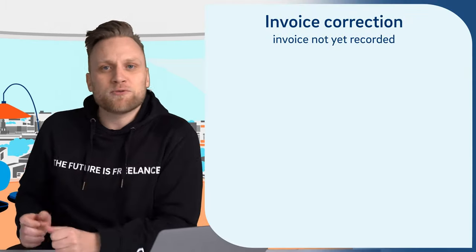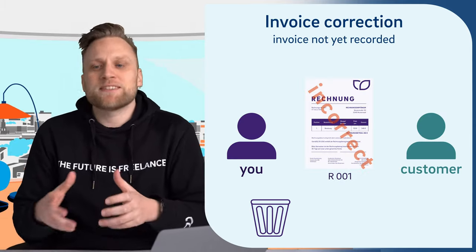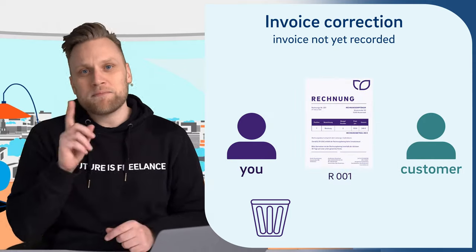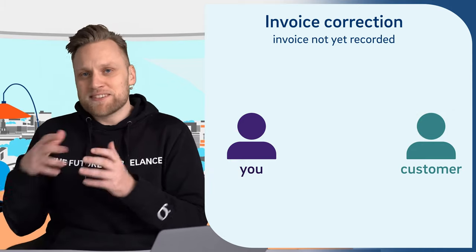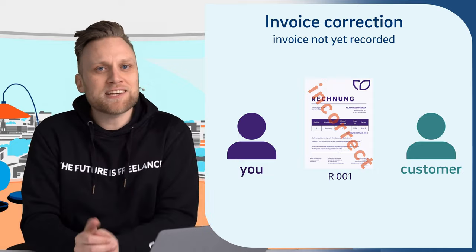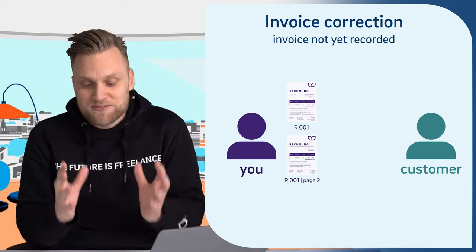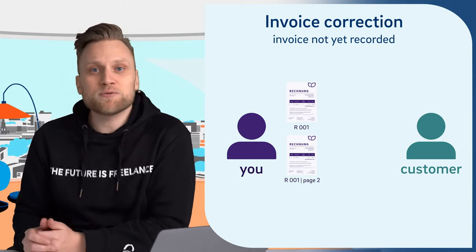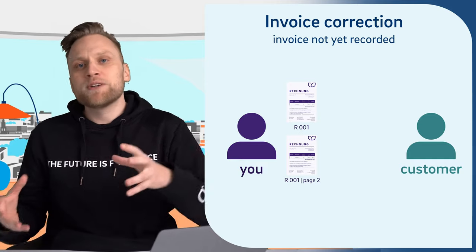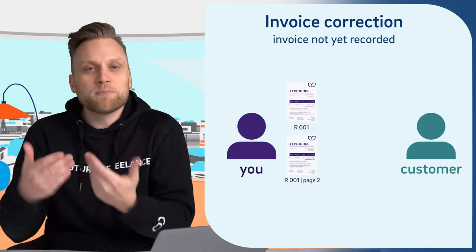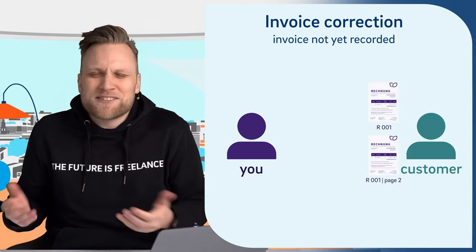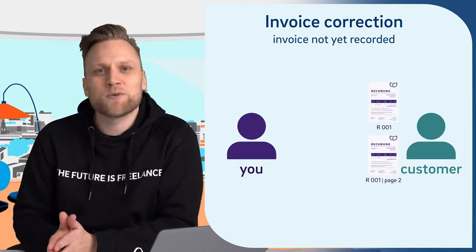For invoices not yet in circulation, correction is quite simple: you can delete the document in your invoicing program and create a new corrected invoice under the same invoice number, then send it out. Alternatively, there is no rule that an invoice must consist of a single document — you can supplement an invoice with a second document covering the missing details, as long as you clearly reference the original invoice so it is evident everything belongs together. Both documents must be recorded together in your accounting and with the customer.